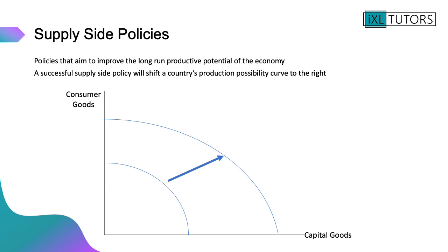In terms of what supply side policy is, it's a policy that aims to improve the long-run productive potential of the economy. A successful supply side policy will shift the country's PPF, or production possibility curve (PPC), to the right. There's a really good link here back to theme one — right at the start you looked at PPFs, and you saw that when an economy grows, it will shift the PPF outwards. In the second PPF, the one on the right, they can produce more consumer goods and more capital goods at every single point, due to the increase in the productive potential of the economy.